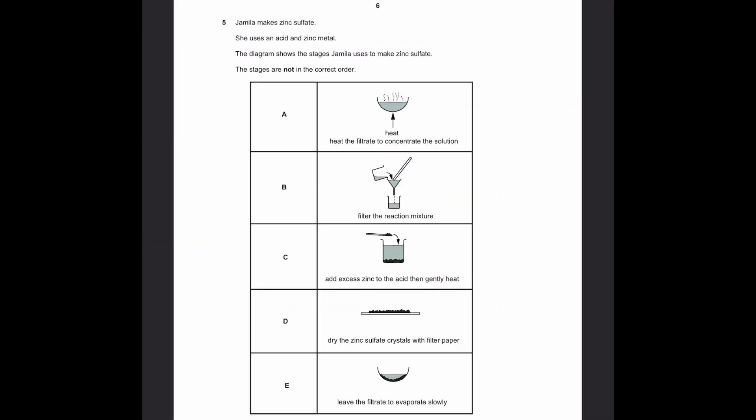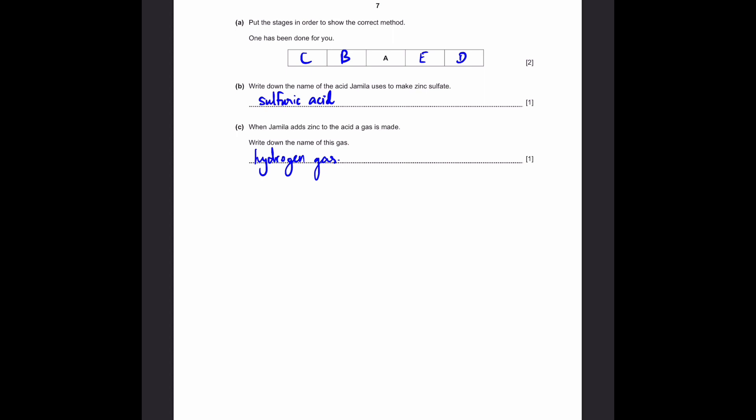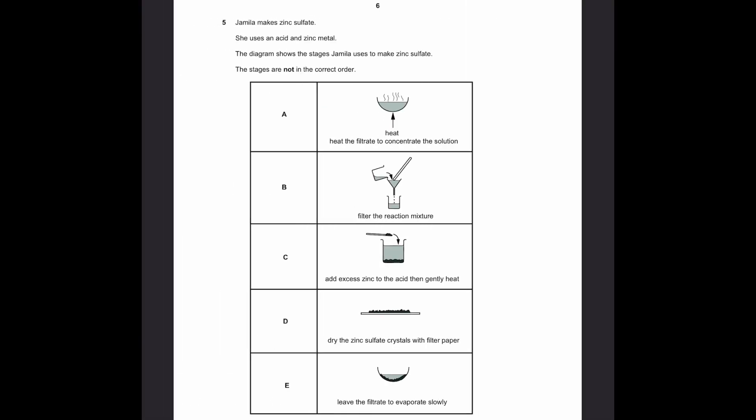Question 5. Jamila makes zinc sulfate. She uses an acid and zinc metal. The diagram shows the stages Jamila uses to make zinc sulfate. They're not in the correct order. Put the stages in order to show the correct method. One has been done for you. We already have A as the third step. So, it's B, C, D, or E for the first step. The first step actually is to add excess zinc to the acid and then gently heat. Only then the reaction will start. And then once the reaction is ended, the second step will be to filter the reaction mixture. So that you will remove the excess zinc which is added, and only have the reacted solution.